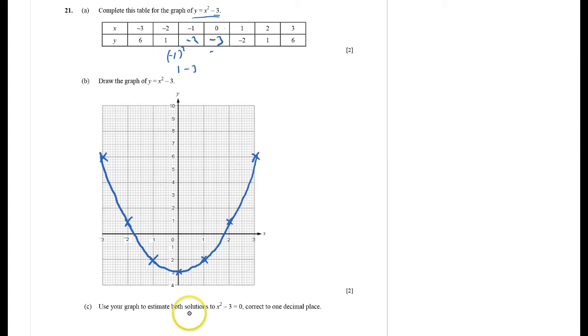And I've got to use my graph to estimate both solutions. There's two solutions to x squared minus 3. That's the curve. When does this equal 0? Well, it equals 0 here and here. So I reckon it's about, on my graph, minus 1.7 and 1.7. But you can use your graph to work it out. As long as you can actually see, I put the two crosses down there to show me, and that means I'll get those two marks.